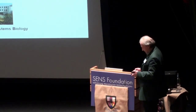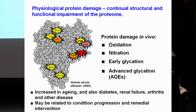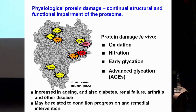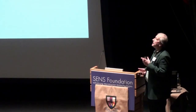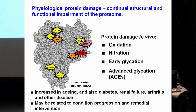We study protein damage. We've been using stabilized isotopic dilution analysis, tandem mass spectrometry — the gold standard quantitative mass spectrometric method — to study protein damage for about 10 years now. Physiological protein damage is a continual structural and functional impairment of the proteome. Spontaneous damage is oxidation, and I show here on the graphic of human serum albumin the hot spots for modification. Protein damage is not random — there are neighboring group interactions within proteins that make for really high selectivity.